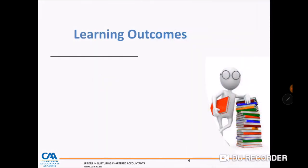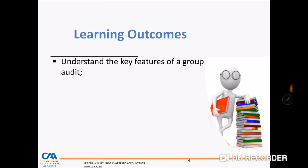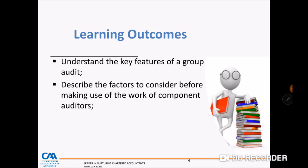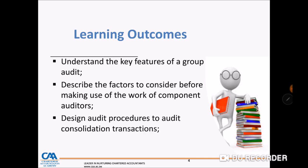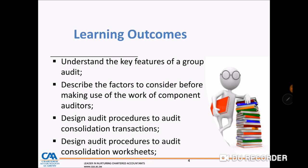Our learning outcomes are as follows. We want to be able to understand the key features of a group audit — how it is different from the auditing we've been used to when auditing standalone financial statements. We want to be able to describe the factors to consider before making use of the work of component auditors, and to understand who component auditors are. We also want to be able to design procedures to audit consolidated transactions as well as consolidation worksheets.